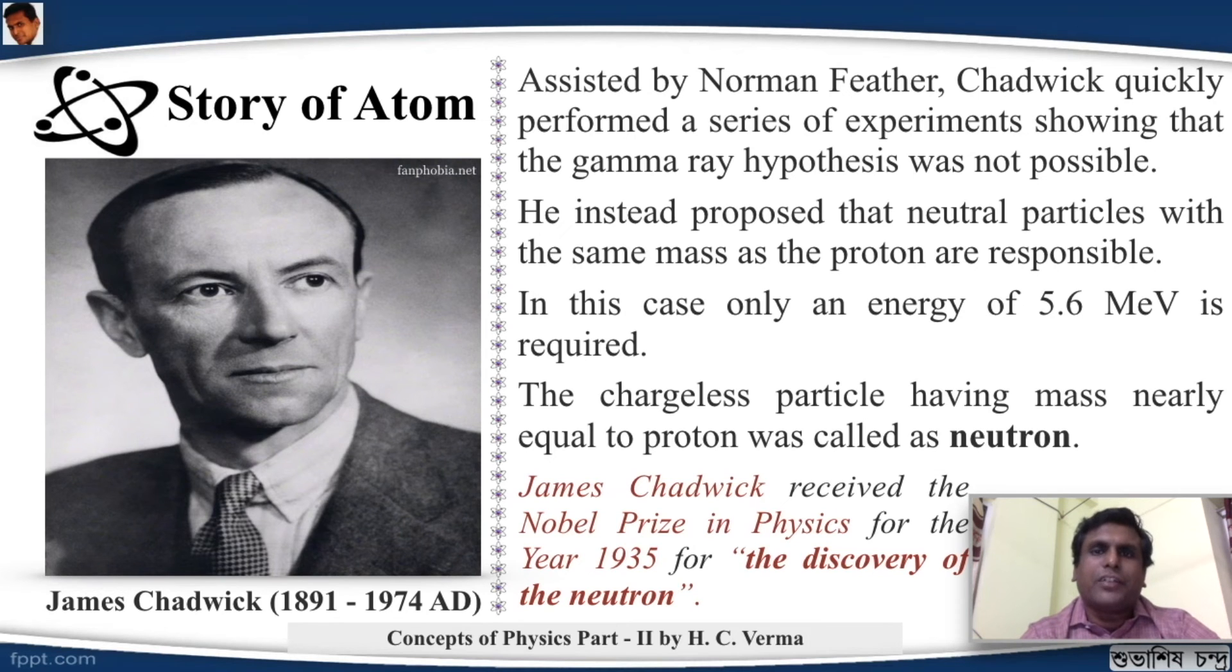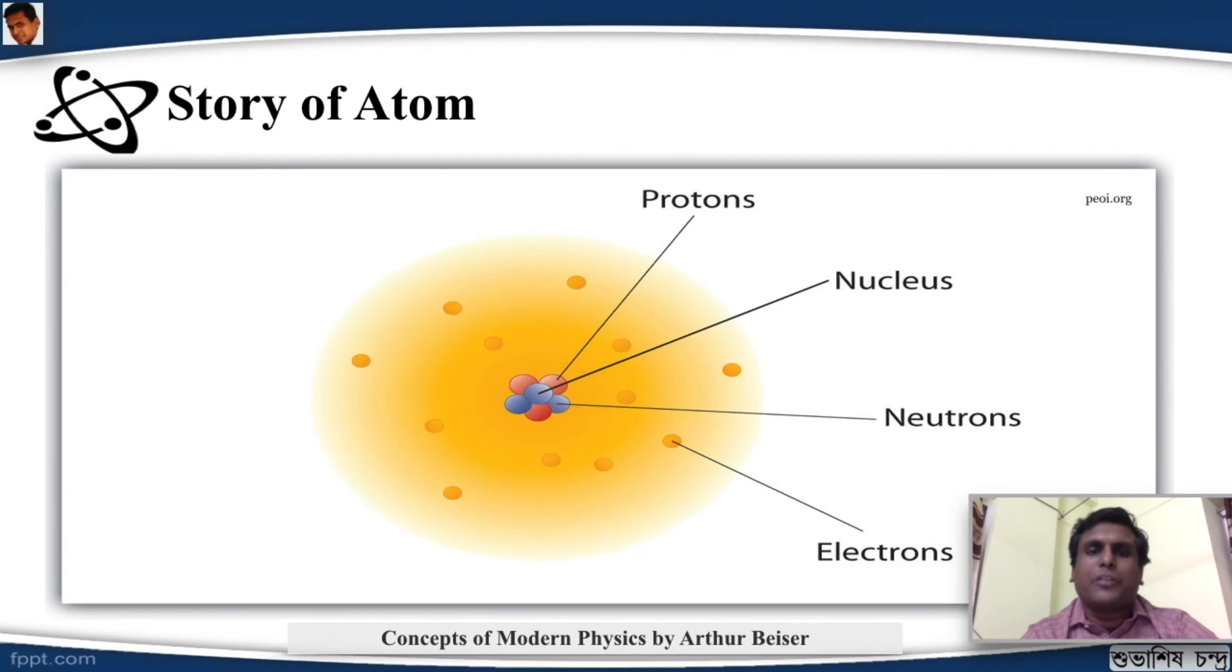James Chadwick received the Nobel Prize in Physics for the year 1935 for the discovery of the neutron. James Chadwick was the student of Ernest Rutherford. So, J.J. Thompson discovered electron. His student Ernest Rutherford discovered proton. And James Chadwick, the student of Ernest Rutherford discovered neutron. So, we arrive at this atomic model. The protons and neutrons forming the nucleus and an electron cloud around it.